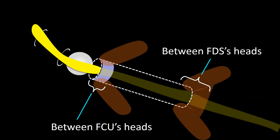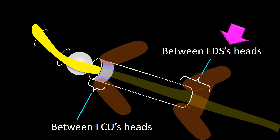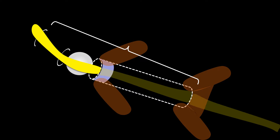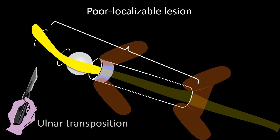The two previously mentioned sites of entrapment are the region between the flexor carpi ulnaris heads and the region between the flexor digitorum superficialis heads. Entrapment can also occur at the ulnar sulcus or medial epicondyle region. When entrapment involves all or most of these sites, it presents as a diffuse pathology called a poorly localizable lesion, which most often requires ulnar nerve transposition — a lengthy procedure.